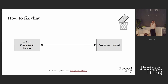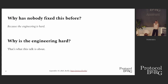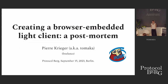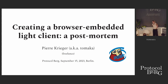The solution is to basically throw away JSON-RPC nodes. Why has nobody done that before? Because the engineering is hard. This is what this talk is about: Creating a Browser Embedded Light Client. I'm Pierre Krieger, a.k.a. Tomaka.